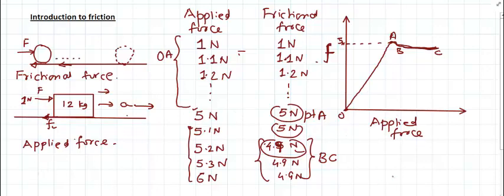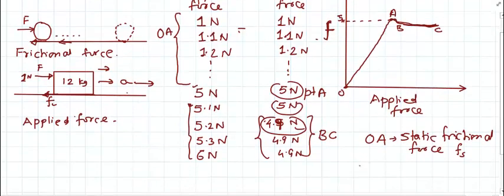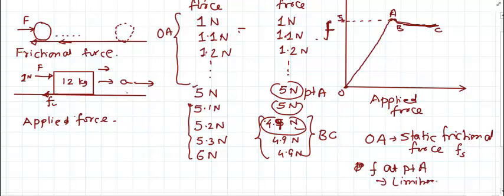In the region OA, as we keep increasing the applied force the frictional force keeps increasing — this frictional force is known as the static frictional force, denoted by f with suffix s. The maximum value at point A — 5 newton — is the maximum value of the static frictional force, and we call that maximum value the limiting frictional force.